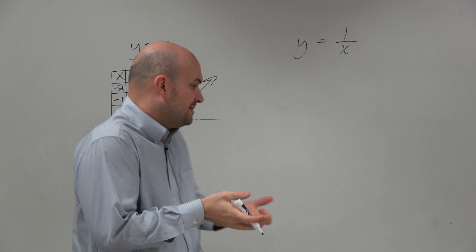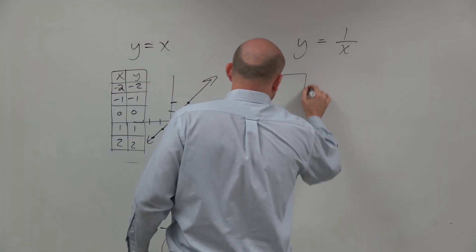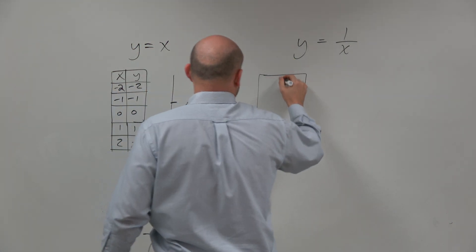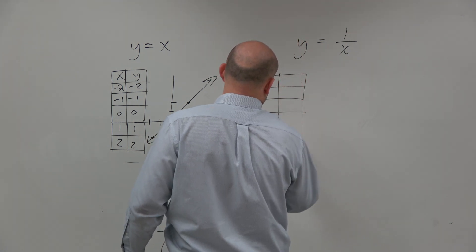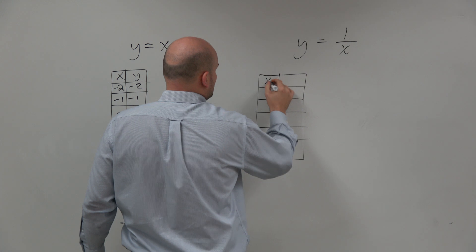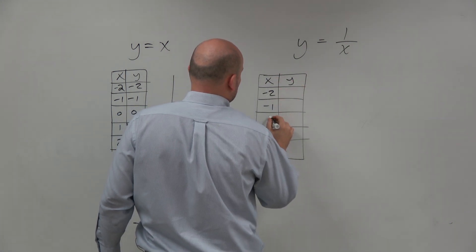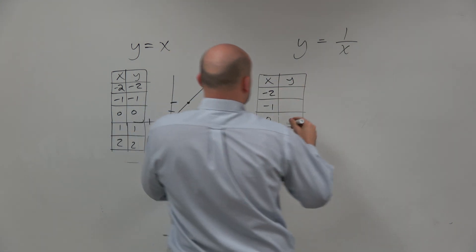We could look at this again using a table. Let's use the same table of values so we can see how that changes from the identity function. We could add x, y. So we could do negative 2, negative 1, 0, 1, and 2.